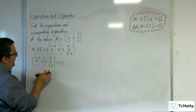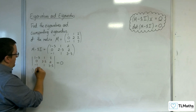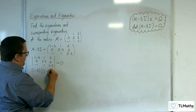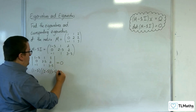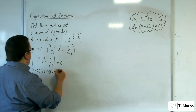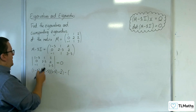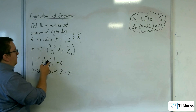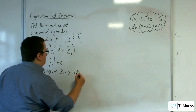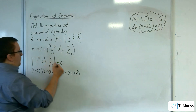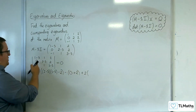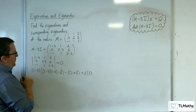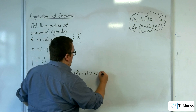Working out the determinant, we're going to have (1-λ) times [(2-λ)(3-λ) - 2], then take away 1 times [0·(3-λ) - 0], so 0. Then take away 2 times -1, so plus 2. Then plus 2 times [0·1 - (-1)(2-λ)], so plus (2-λ).